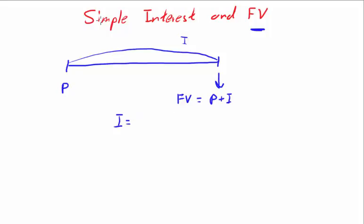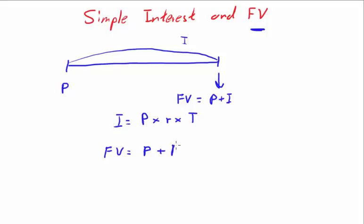This begs the question: what is interest? The simple interest formula is: simple interest equals principal multiplied by your simple interest rate multiplied by time. So let's substitute that in — future value is now principal plus your interest, which is principal multiplied by your simple interest rate multiplied by time.